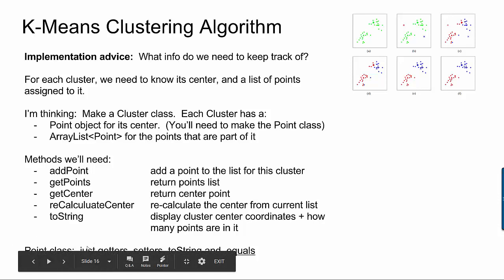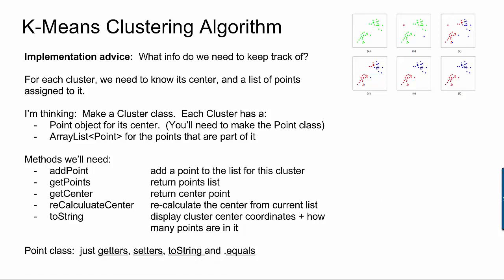So I'm thinking we'll make a point object, a point class, and a point will just have a row and a column and it'll have getters and setters and maybe a toString and a dot equals method that will let you compare to see if two points are equal to each other. Then for your cluster class, you're going to have a point object representing the cluster's center and then you'll have an ArrayList of point objects for all of the specific pixels that have been assigned to that cluster.